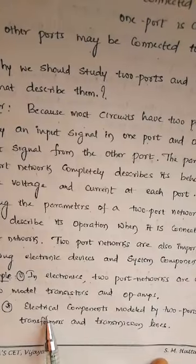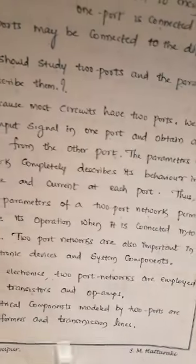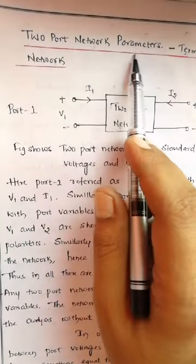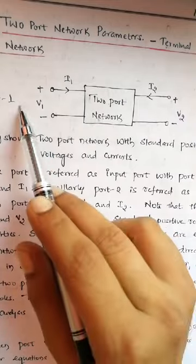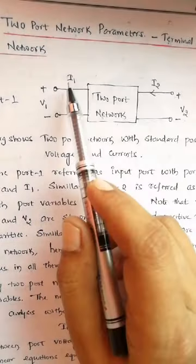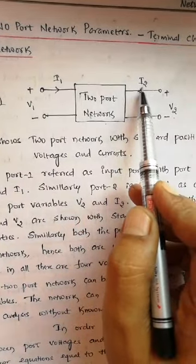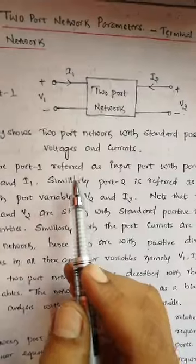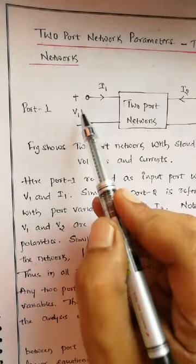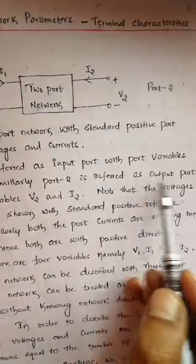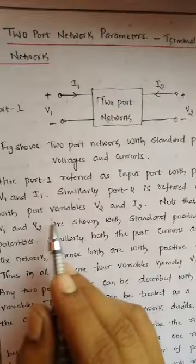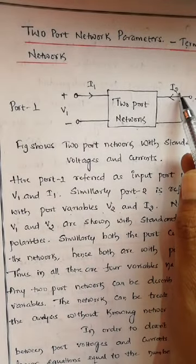Now we will discuss the terminal characteristics of two-port network parameters. In the diagram, port one is the first pair of terminals and port two is the second pair of terminals. The voltage across port one is V1 and across port two is V2. The current entering port one is I1 and the current at port two is I2. Port one is referred to as the input port with port variables V1 and I1. Port two is referred to as the output port with port variables V2 and I2.